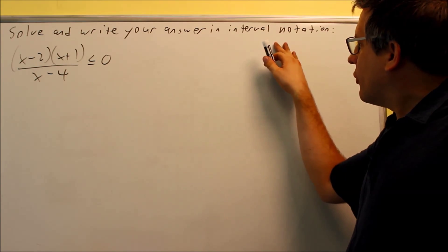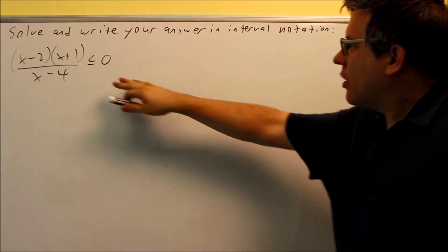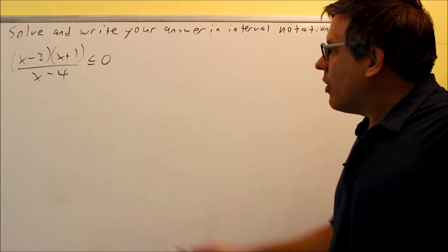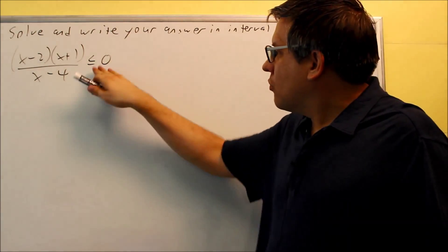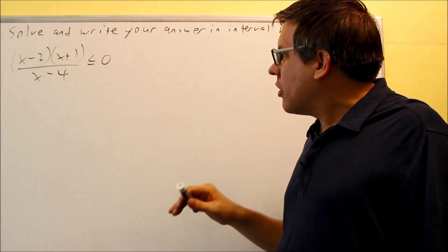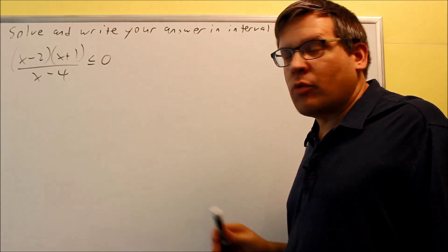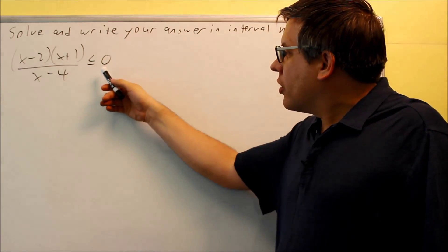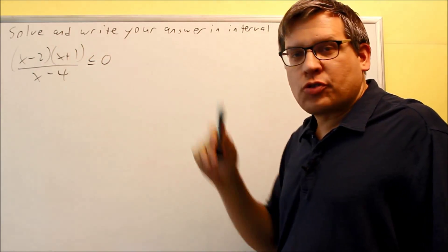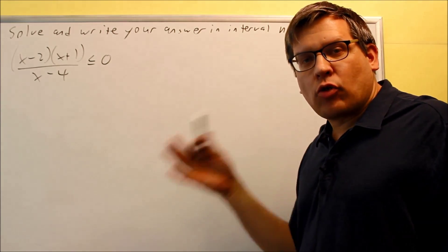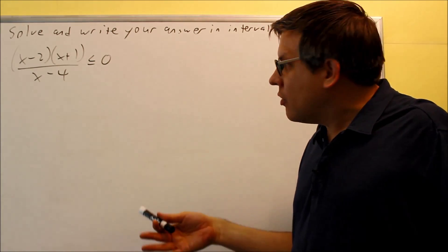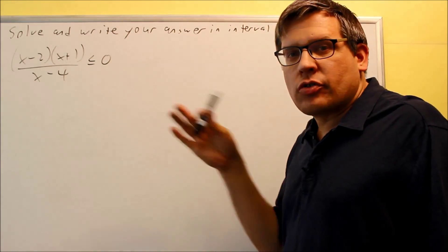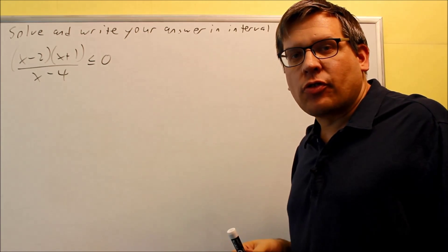We're going to solve and write an entry-level notation again, and this time we have a fraction with an inequality symbol less than or equal to zero. Whenever you have an inequality like this where you have either a rational expression or a quadratic with higher powers and an inequality, there's a special process for doing that.